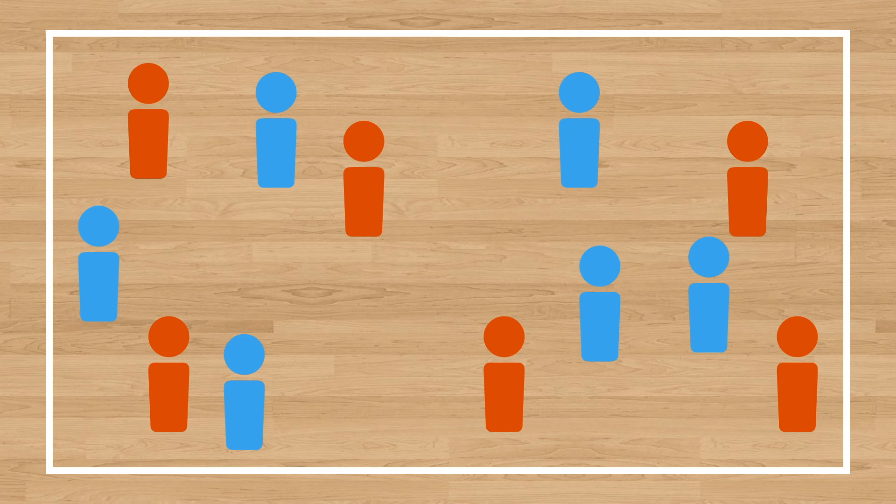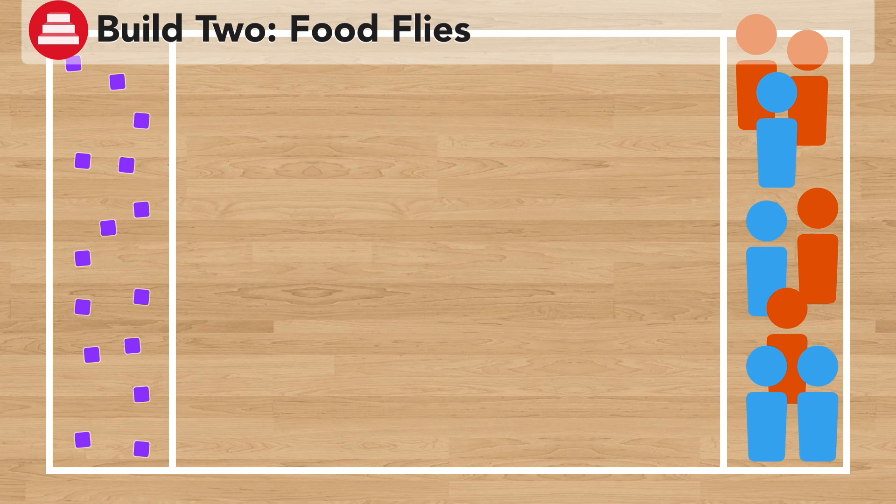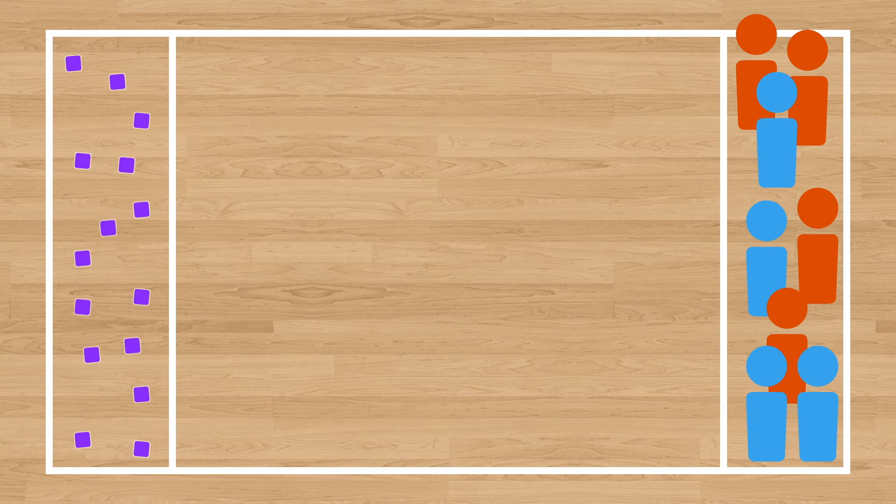Once you feel comfortable moving on to the next build, it's time for build two, which is food flies. In this build you're going to have your playing area divided into three parts. Where the frogs and toads are standing, that's the burrow. Where the bean bags are, that's the river bank where all the flies are hanging out. And everywhere in between is the river.